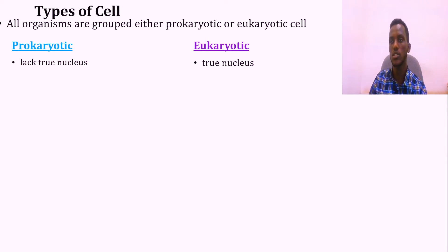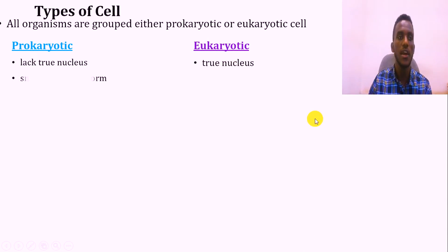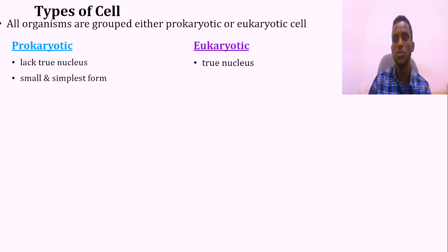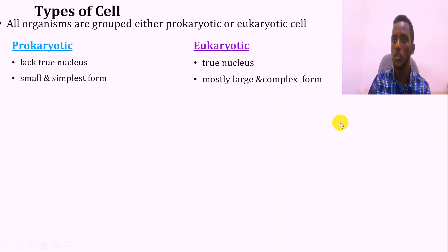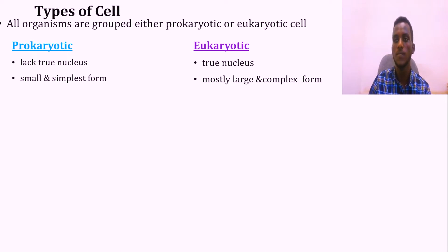Based on their cell structure, a prokaryotic cell is small - they are small based on size - plus their arrangement is simple, a simple cell structure. But in case of eukaryotic, by comparison to the prokaryotic, eukaryotic cells are large, plus their structure is complex.